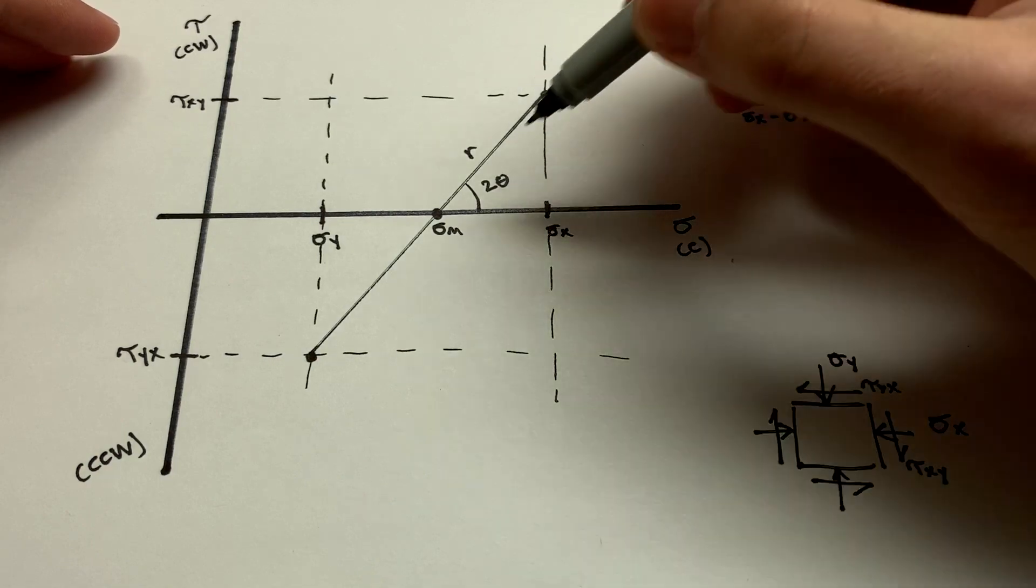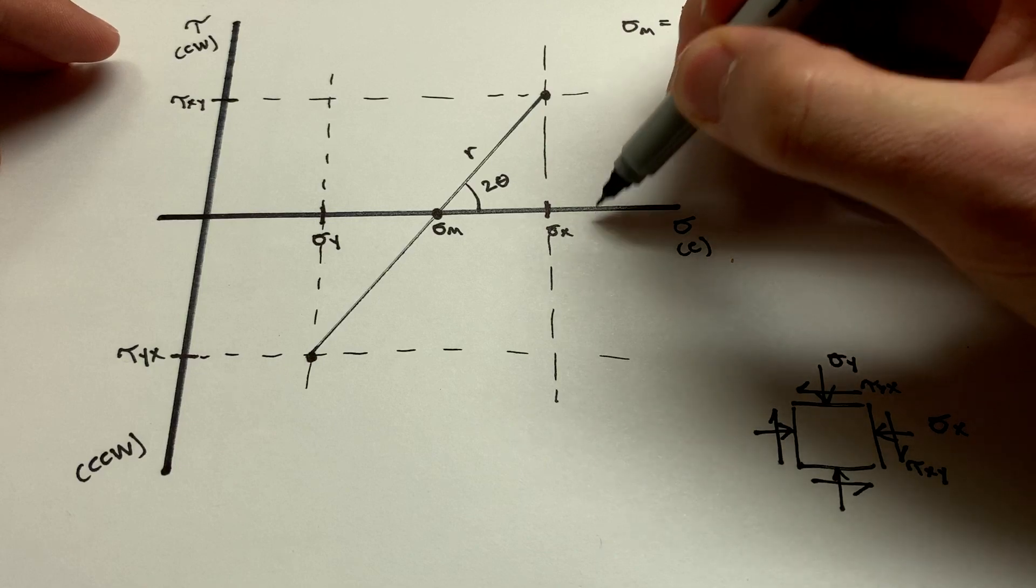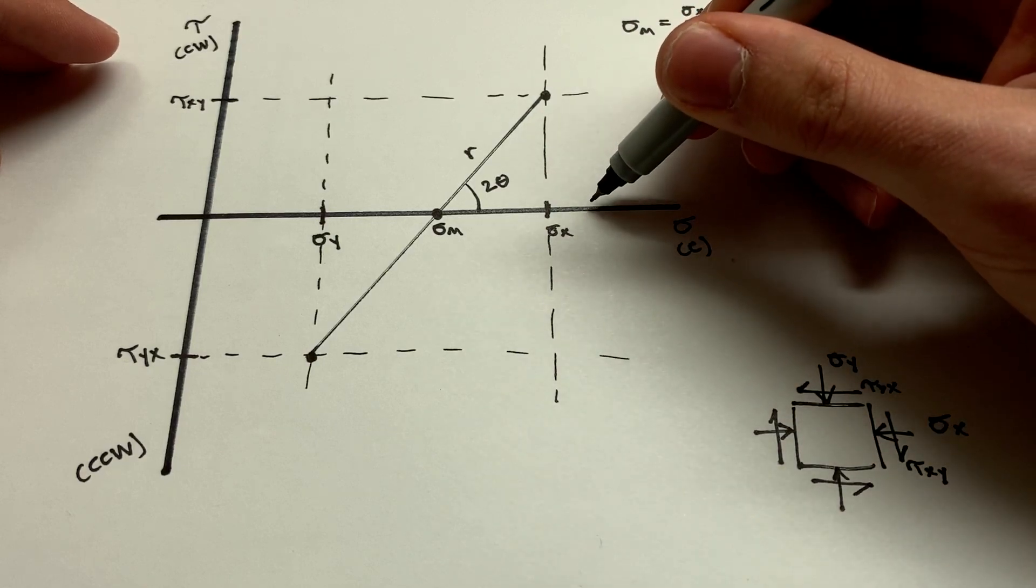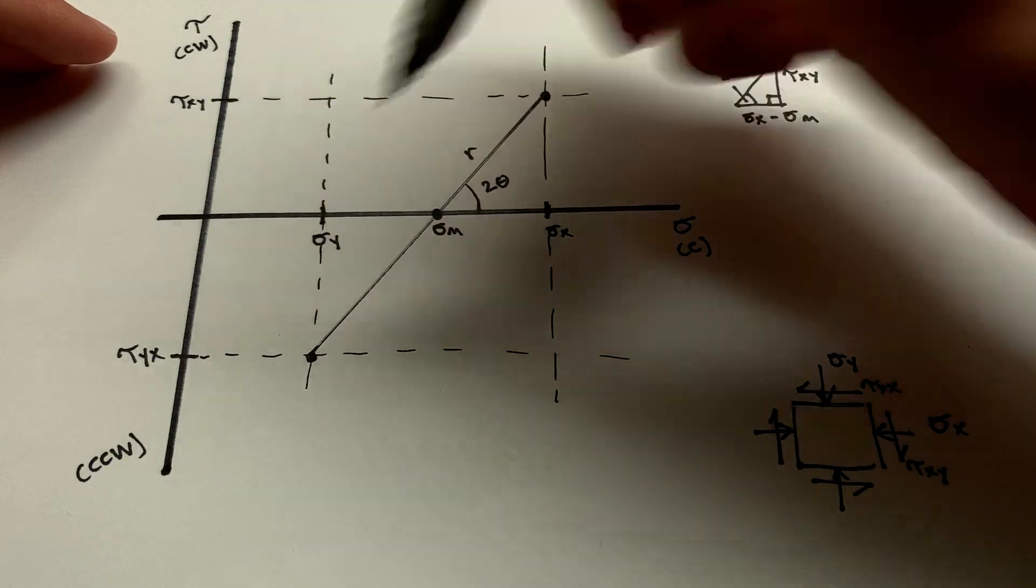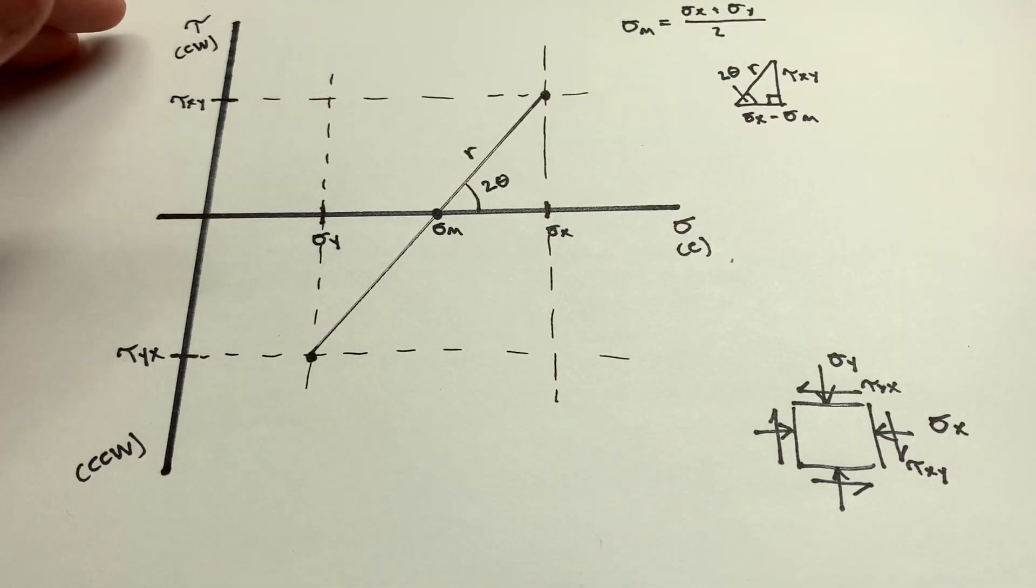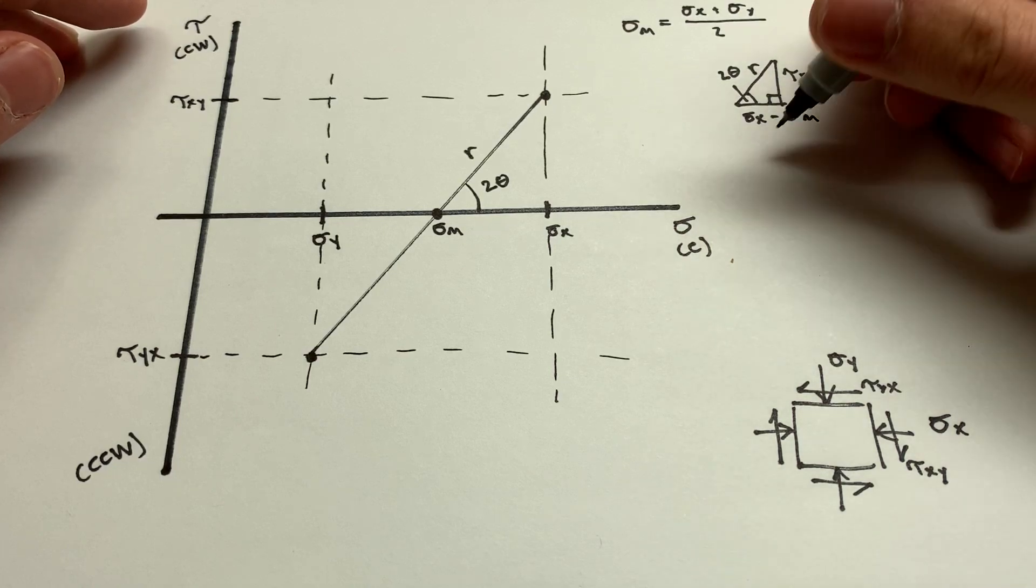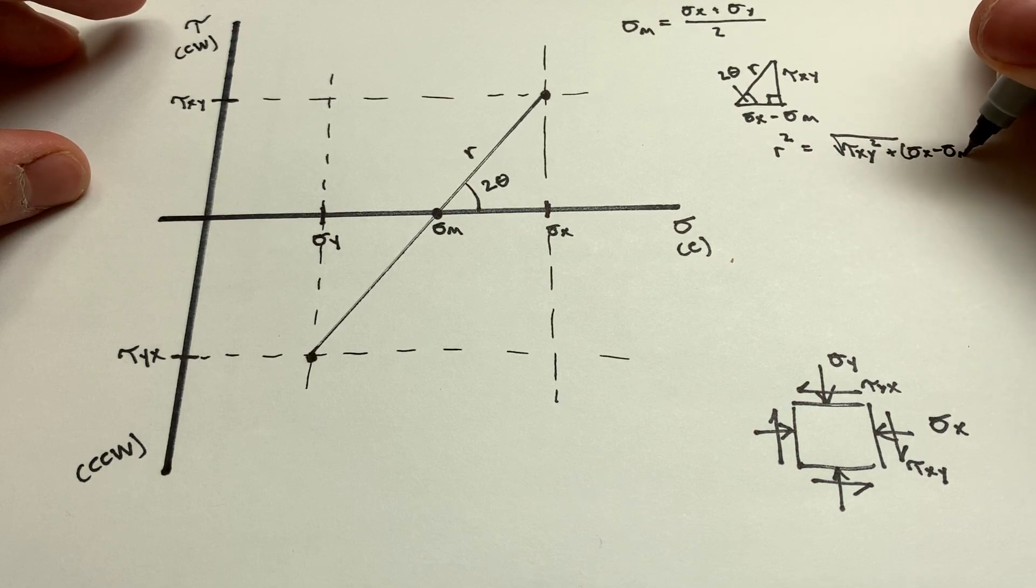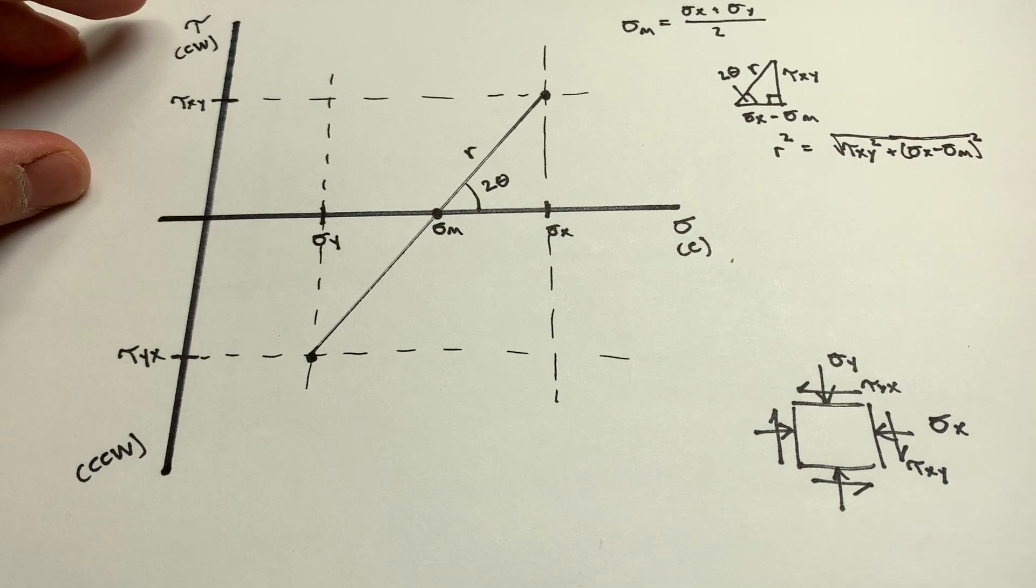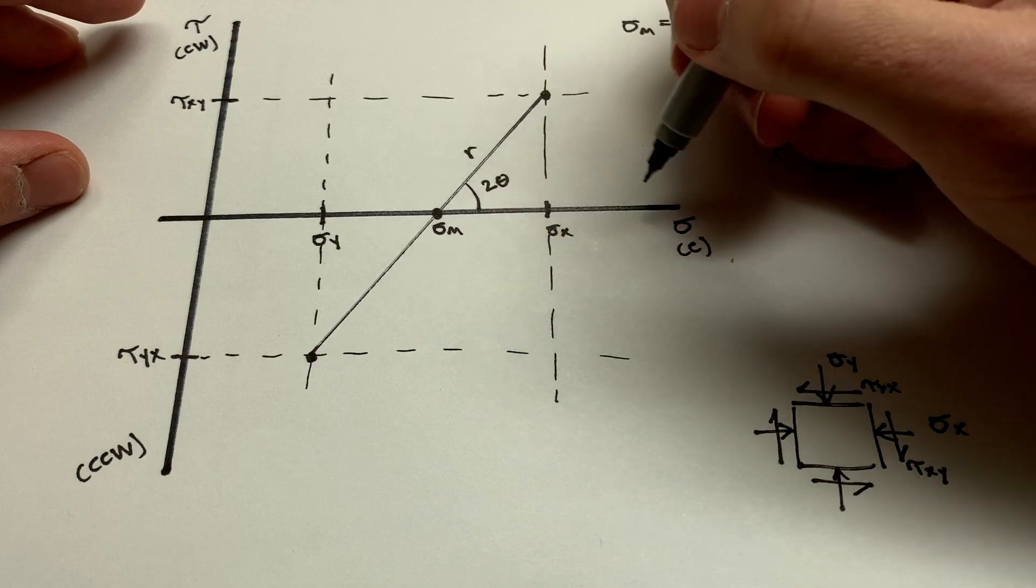And of course, now you can probably realize that if we have the radius of the circle, then we can just go that same distance, r out, and find where we're going to reach the maximum stress. That'll be sigma 1 and the minimum stress, which would be sigma 2, or closest to sigma y, I should say. Okay, so just doing a little bit of a Pythagorean theorem here, we can say that r is equal to the square root of tau xy squared plus the difference between sigma x and sigma m squared.